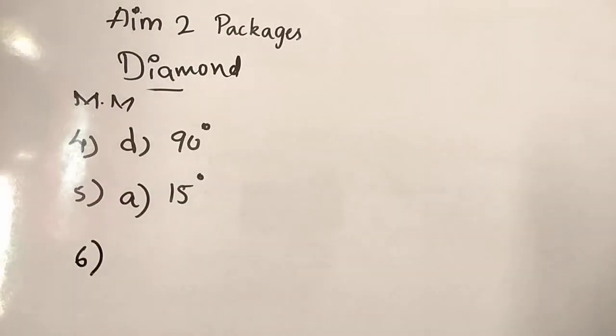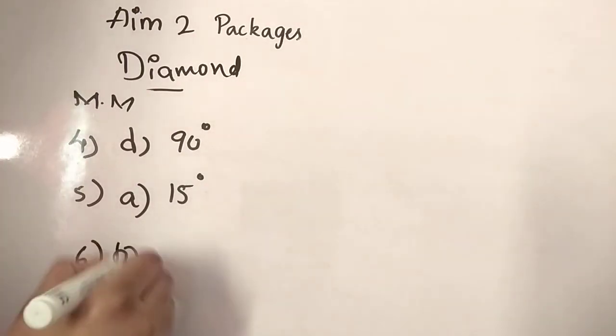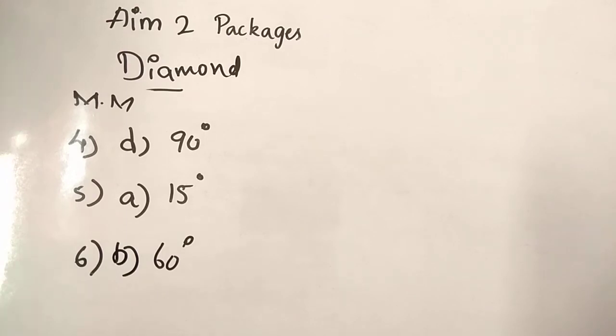Sixth one. If tan square theta is equal to 1 plus cos 60 divided by 1 minus cos 60 then what is theta? So, theta is option B 60 degree. Okay?